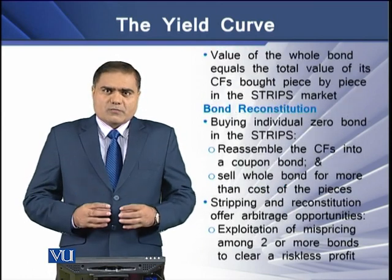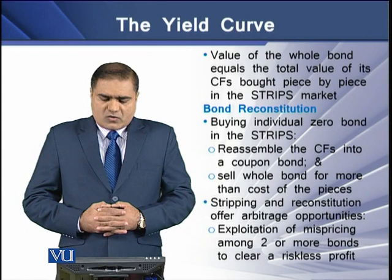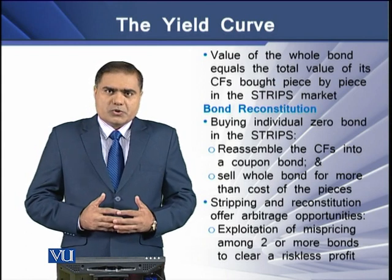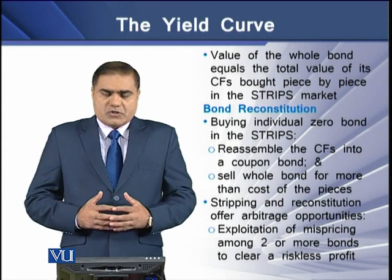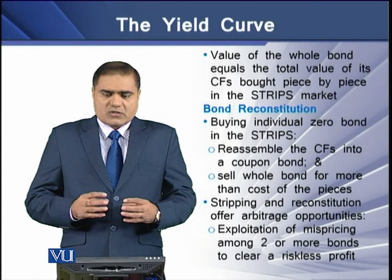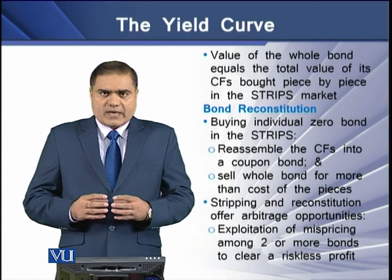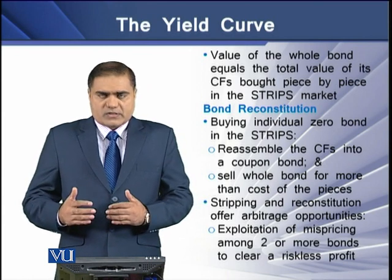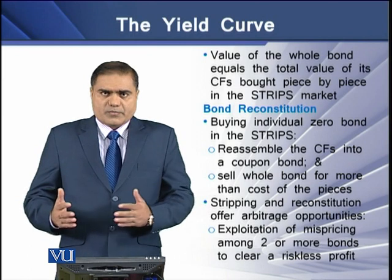In the process of bond stripping, the value of the whole bond equals the total value of the individual pieces of cash flow that are bought piece by piece in the strips market.